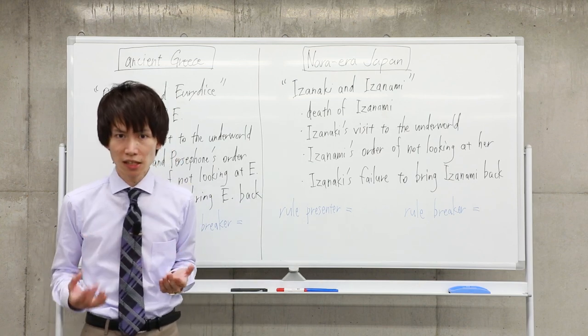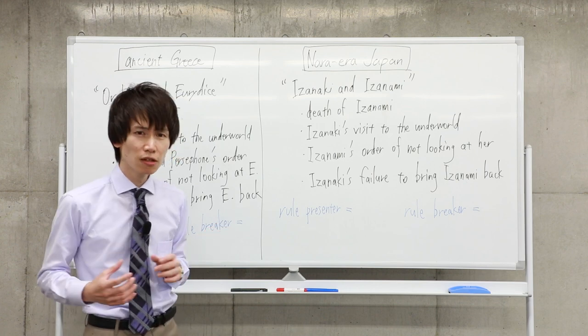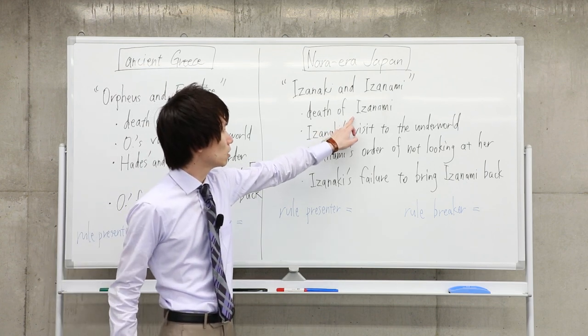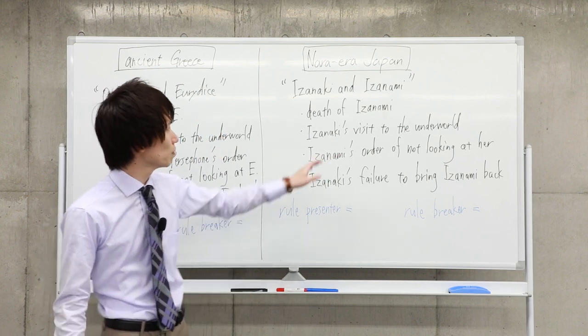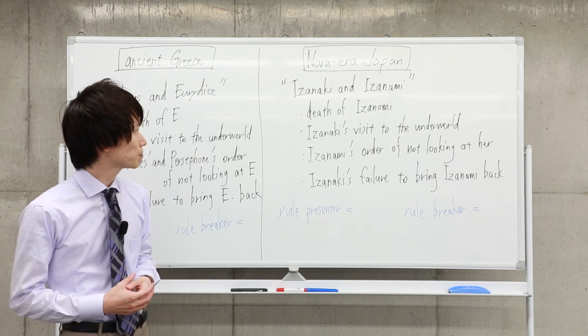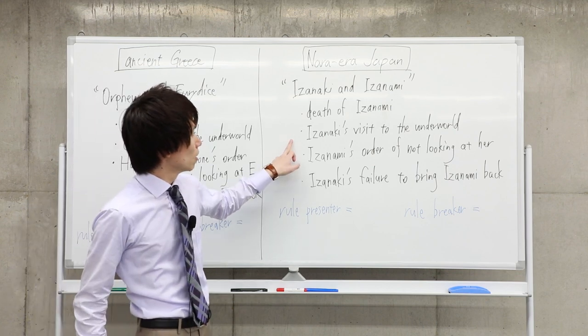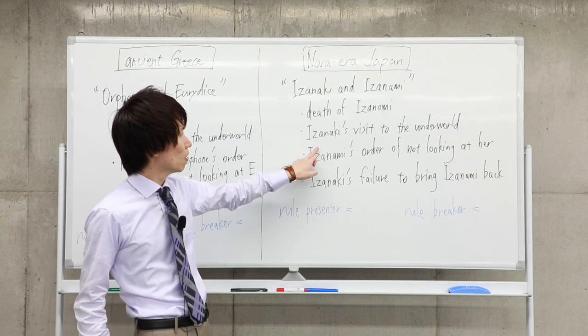When Izanami gave birth to Kagutsuchi, Kagutsuchi unintentionally burns the genitals of his mother Izanami. Because of the wound, Izanami dies and is sent to the underworld. This event makes Izanaki very sad.